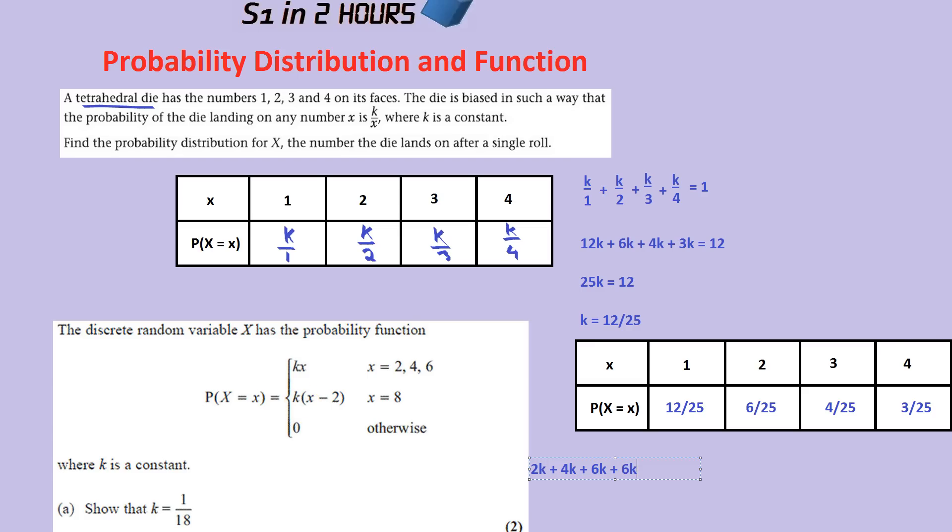And what do probabilities add up to? They add up to 1. Solving that, that would be, I believe, 18k equals to 1. And dividing both sides by 18, k is equal to 1 over 18. Which answers the question and gets us the two marks.